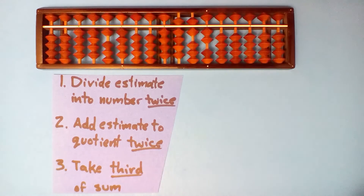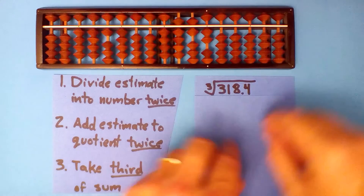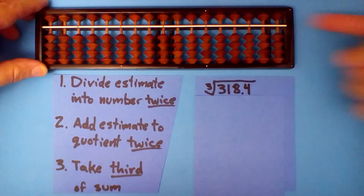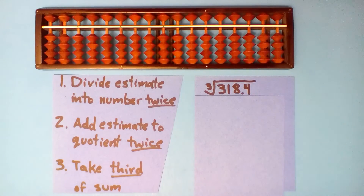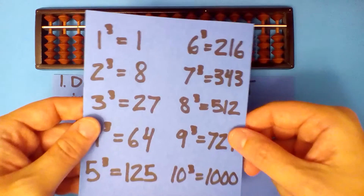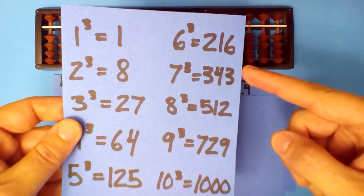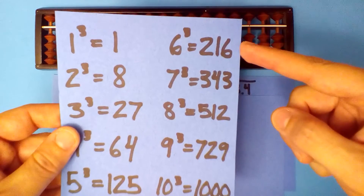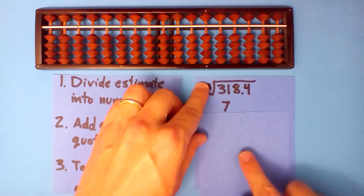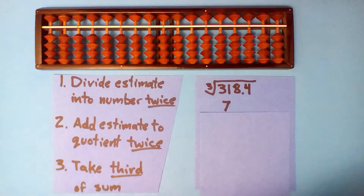What is the cube root of 318.4? We need our cubes — what cube is close to 318.4? 7 is close; 6 is not as good. Let's use 7 as our estimate. So divide 7 into 318.4.